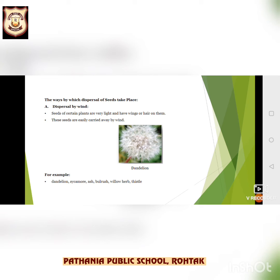Dispersal by wind: many seeds are carried away by the wind. Seeds of certain plants are very light and have wings or hair on them, and these seeds are easily carried away by wind. For example, dandelion, desert rose, and milkweed — they are like parachutes. The winged seeds of the Indian elm tree glide in the wind. Some of these seeds fall on the ground, get covered with soil, and germinate when it rains. Examples include dandelion, sycamore, ash, bulrush, willow herb, and thistle.